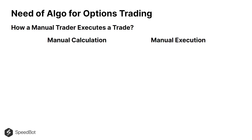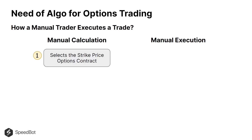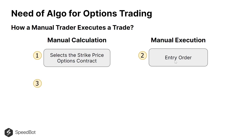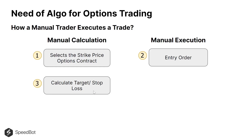Let's look at what the manual trader calculates. First is strike price selection — based on the option trading strategy, the trader chooses the strike price, which could be based on the current market price or five to six strikes away from it. This selection is done manually. Next, the trader executes that strike price entry order, and once filled, manually calculates the target and stop loss.